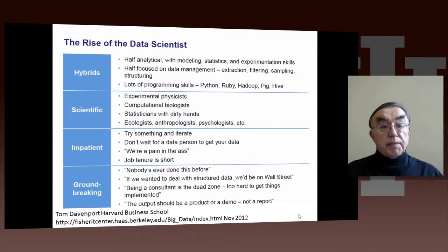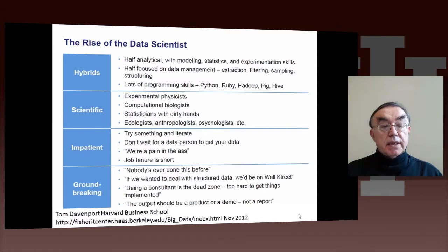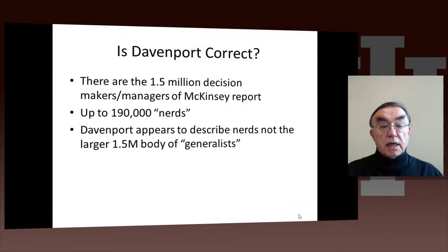At the top, he makes an important but possibly slightly controversial statement about what a data scientist is. He says that the person is 50% statistician — modeling and things like that — and 50% computer science issues, such as data management and lots of programming. There are two comments on that, which I have on the next slide.